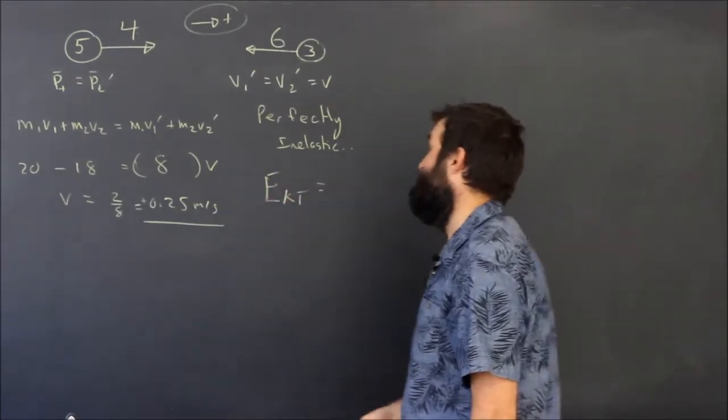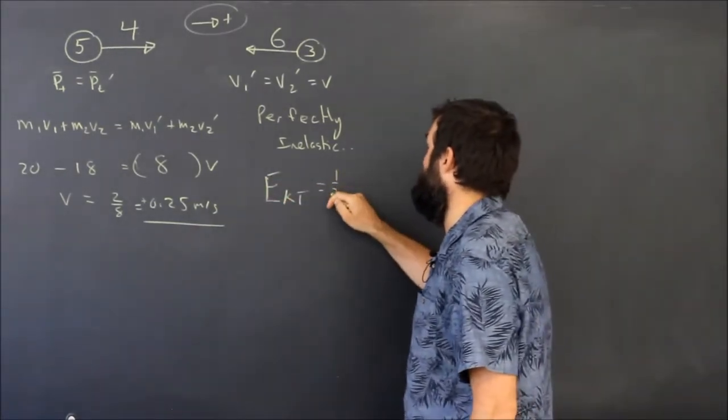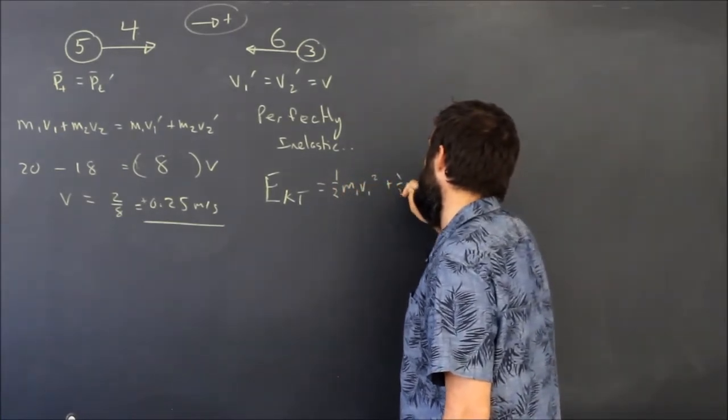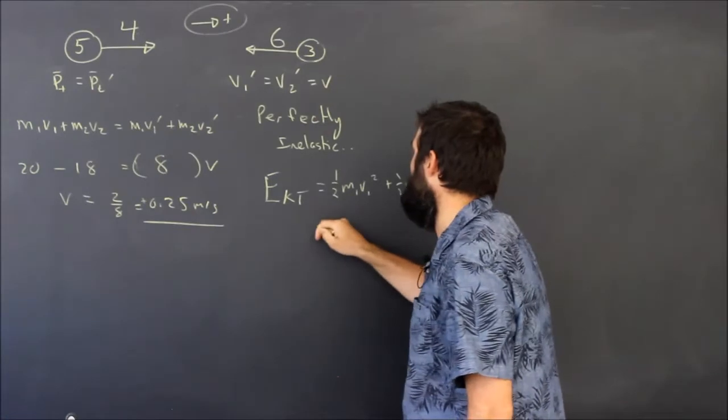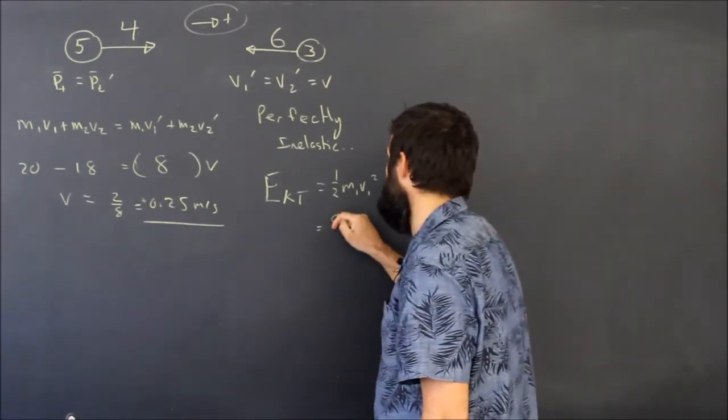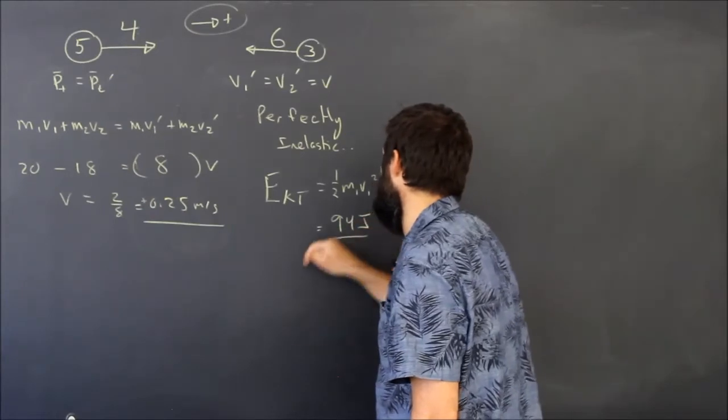Let's first calculate the total kinetic energy before the collision. That was a half M1 V1 squared plus a half M2 V2 squared. We did this already. This is 80 over 2 plus 188 over 2. This turns out to be 94 joules.